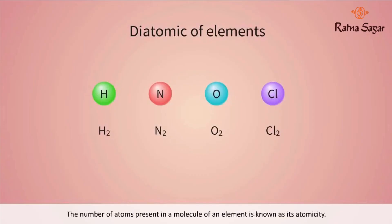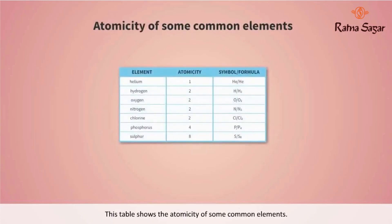The number of atoms present in a molecule of an element is known as its atomicity. This table shows the atomicity of some common elements.